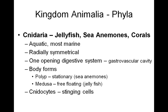Cnidaria. Phylum Cnidaria includes our jellyfish, sea anemones, and our sea corals. They're aquatic and mostly marine. They have radial symmetry, one opening of the digestive system known as a gastrovascular cavity. And there are two body forms — one being the polyp, which is a stationary form, an example being the sea anemone — and in the medusa body form, this would be the free-floating, as seen in the jellyfish. Cnidaria are characterized by their stinging cells known as cnidocytes.